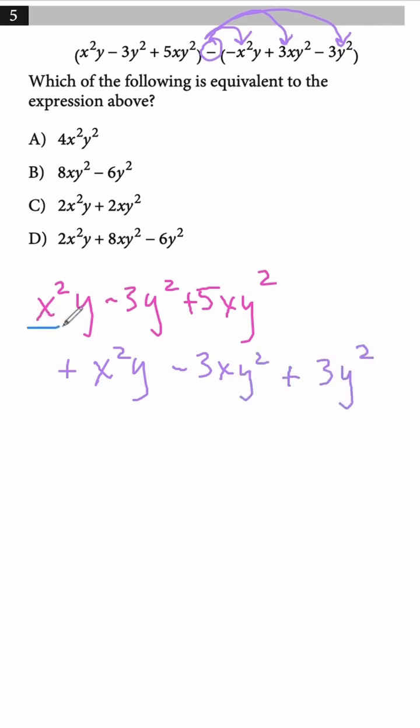Now we're going to look for like terms. We notice there's an x squared y here and here. There's no coefficient written, which means there's an implied coefficient of 1 in front of each of these. Since we have 1x squared y here and here, there are 2x squared y's.